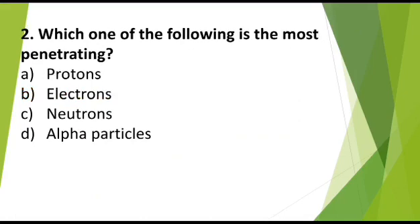MCQ number 2: Which one of the following is the most penetrating? Option A: Protons, Option B: Electrons, Option C: Neutrons, Option D: Alpha particles. Correct answer is neutrons.